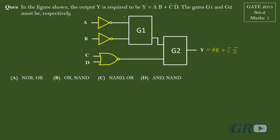For G1, we have inputs as A-bar and B-bar. For G2, one of the inputs is C-bar dot D-bar.